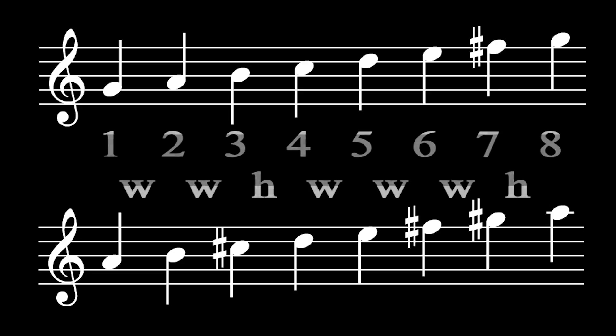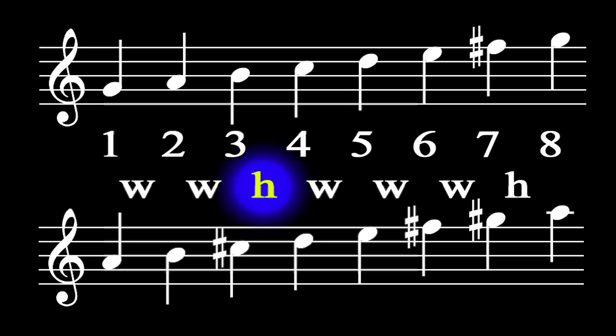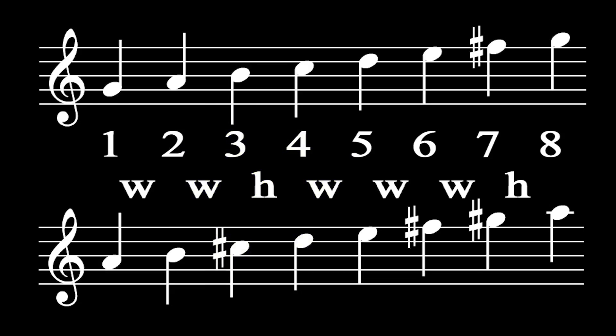The answer is that it's the relationship between the notes that produces different kinds of scales. Let's look at the intervals, or the amount of distance, between each note. In both the key of A and the key of G, there's a whole step between the first note of the scale and the second note of the scale. There's a whole step between the second and the third note. A half step between the third and the fourth note. A whole step between the fourth and fifth note.